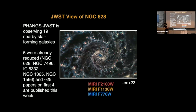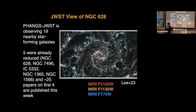PHANGS-JWST is observing 19 star-forming galaxies — ten have been observed already, five have been reduced, and the other five were observed just in the last week or two. We've written something like 25 papers on the first four galaxies, all published this week in a special issue of ApJ. The paper summarizing the goals of the PHANGS-JWST program was written by Janice Lee — that's the one to look at for a summary. We have a lot of pretty pictures, a lot of data, and a lot of different science that we can do with it.